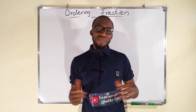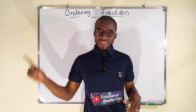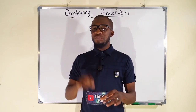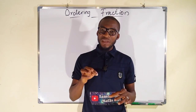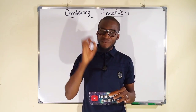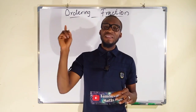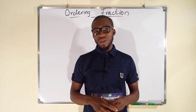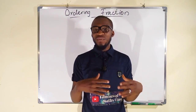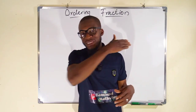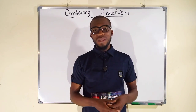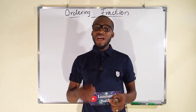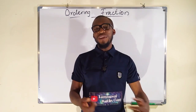If two or more fractions have the same denominator, the biggest fraction among them is that fraction that has the highest numerator. And when they have the same numerators, the biggest among them is the one that has the least denominator.